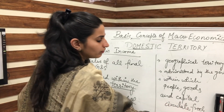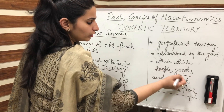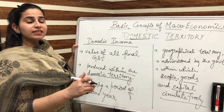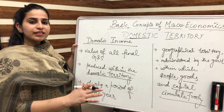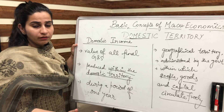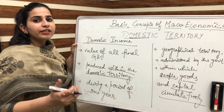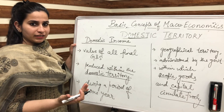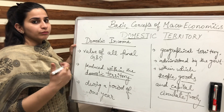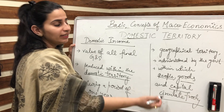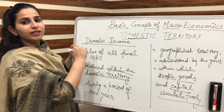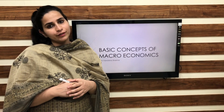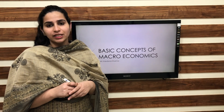As people, goods, and capital circulate freely, it means that they have exclusive right of operation within the domestic territory — they can perform any economic activity to earn profits, and that will be included in the domestic income. Now let's understand the concept of domestic territory in detail.